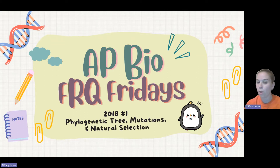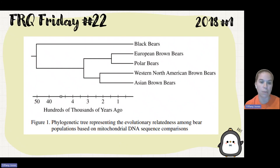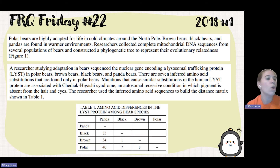Today we're going to be doing 2018 number one. This is on phylogenetic trees, mutations, and natural selection. First, we're given the phylogenetic tree that represents evolutionary relatedness amongst bear populations based on mitochondrial DNA sequence comparisons.